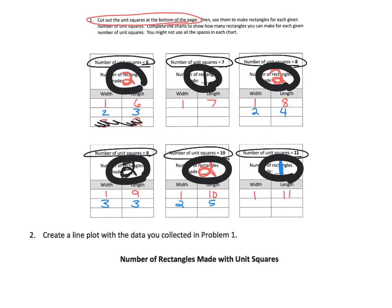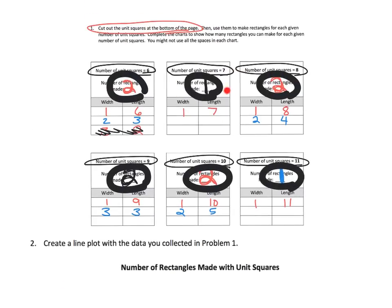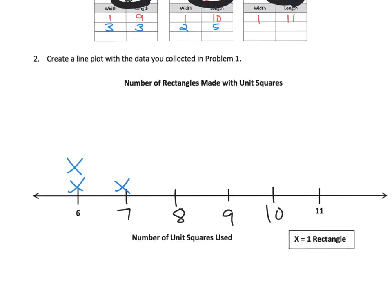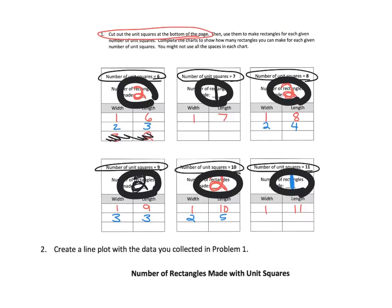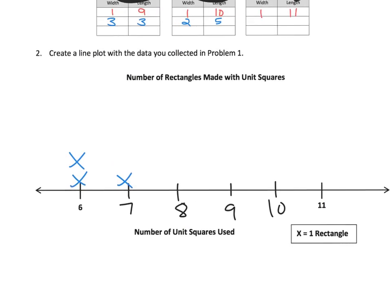And now we need to go up and look and we see that for six we had two possible answers, so we're going to go down here and go one, two. And then for seven we had one possible rectangle, so we're going to just go like that. And then eight was two, nine was two, ten was two, and eleven was one. So we had eight had two rectangles, nine had two rectangles, ten had two rectangles, and eleven only had one rectangle.